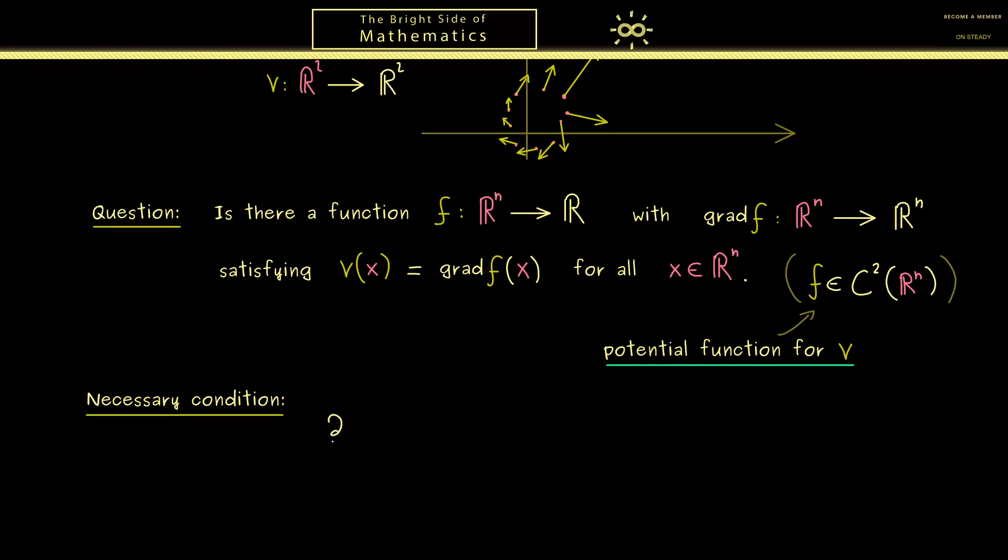So let's start with the partial derivative of one component of V. We take the i-th component of V and form the partial derivative with respect to x_j. This means we have the i-th component here of the gradient of f. However, you know the gradient is formed out of partial derivatives.